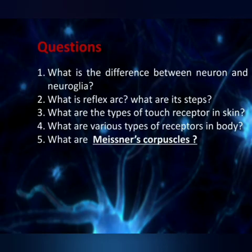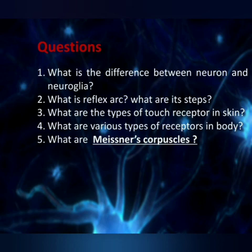Some review questions: What is the difference between neuron and neuroglia? What is reflex arc and what are its steps? What are the types of touch receptors in the skin, including different nerve endings? What are the various types of receptors in the body — including mechanoreceptors, photoreceptors, nociceptors? What are Meissner's corpuscles? These can be asked as two-mark questions.